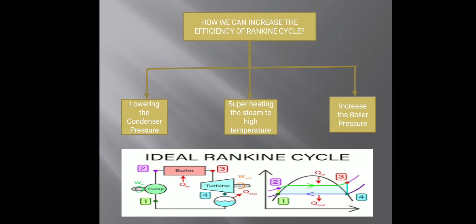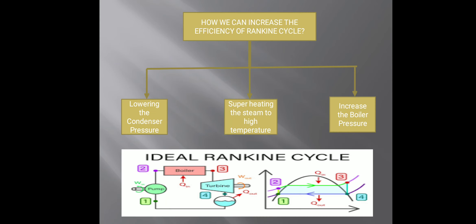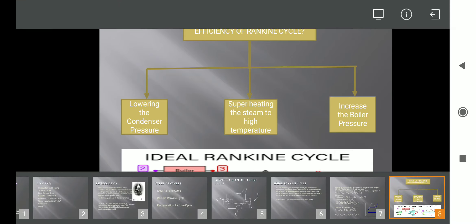The third method is to increase the boiler pressure. When we increase the pressure, the heat supply is reduced because in the wet zone this saturation line decreases. The latent heat required for phase change will reduce as pressure increases, making the process more efficient.